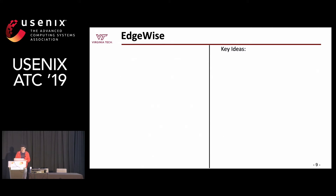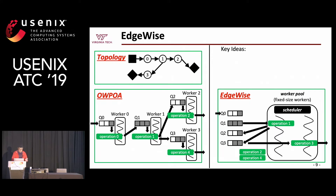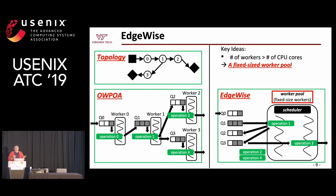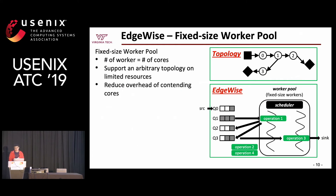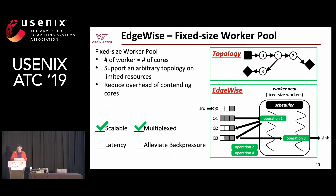We propose Edgewise with two key ideas. First, since the number of workers may exceed the number of CPU cores, we use a fixed-size worker pool. Second, since the OS scheduler is inefficient, we introduce an engine-level scheduler to make wiser choices. With four operations but only two cores, we use only two threads in the pool, and the scheduler determines which operation runs at each moment. Setting pool size equal to the number of cores helps support arbitrary topologies on limited resources and reduces core contention, achieving the multiplex requirement.